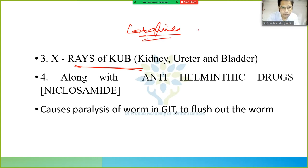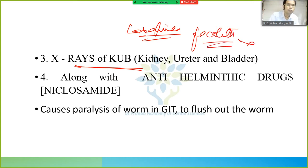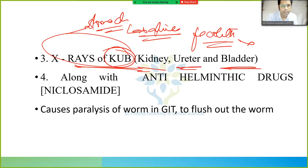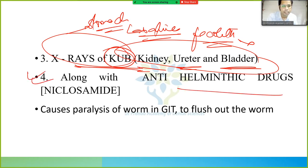Another use of laxatives is before X-rays — for example, KUB (kidney, ureter, bladder) X-ray. If there are fecoliths (stones) in the GIT, the stomach needs to be cleared first so they become visible on X-ray. Laxatives are also given along with anti-helminthic drugs.